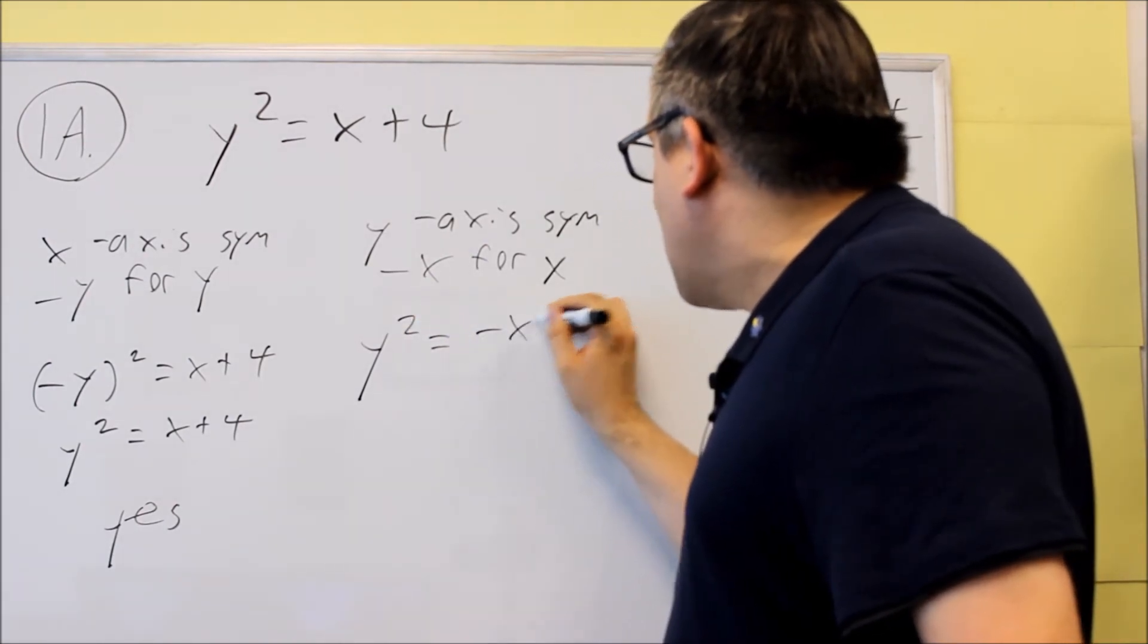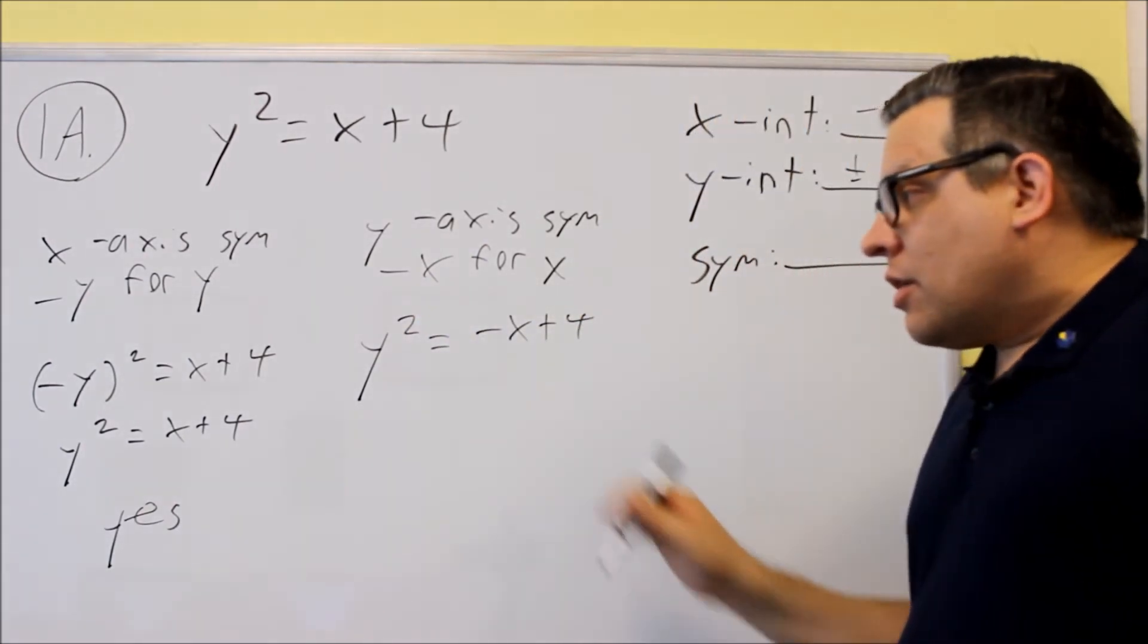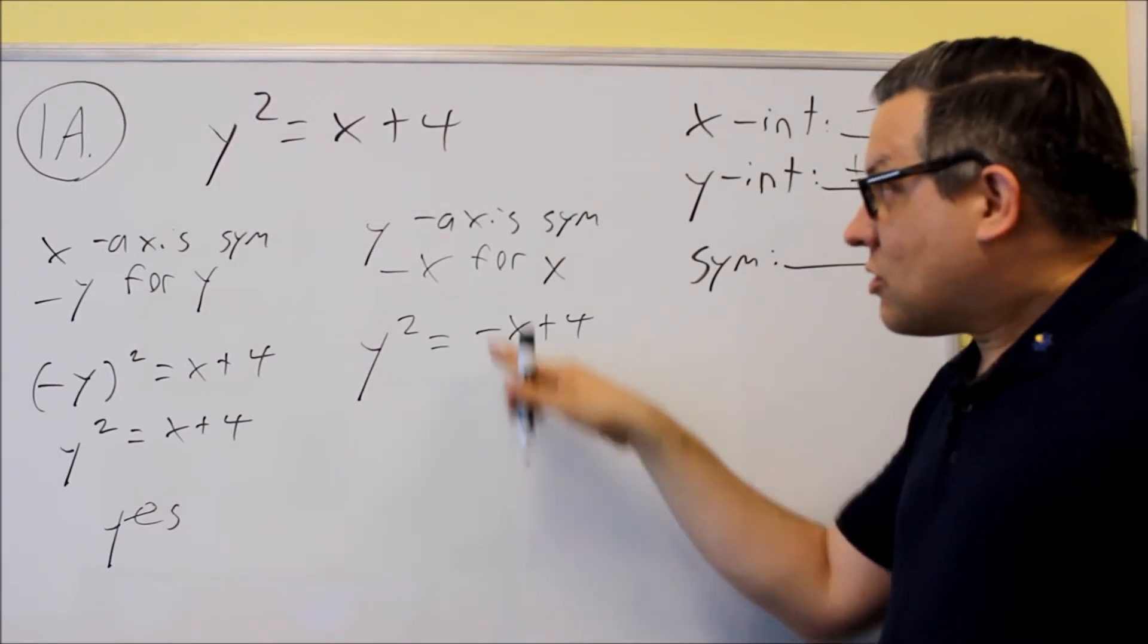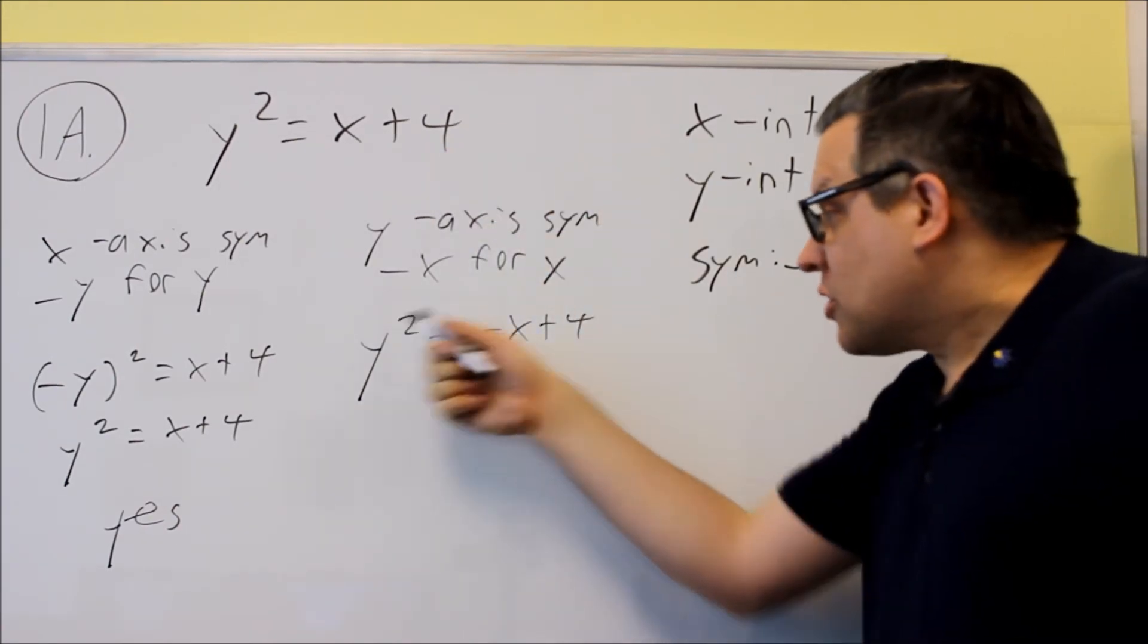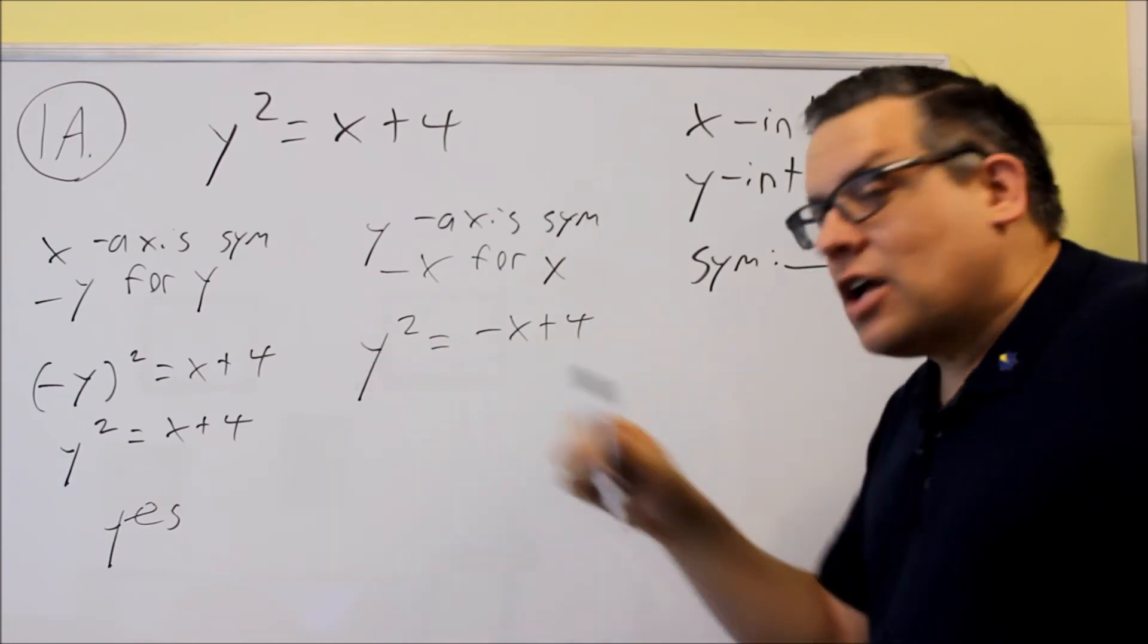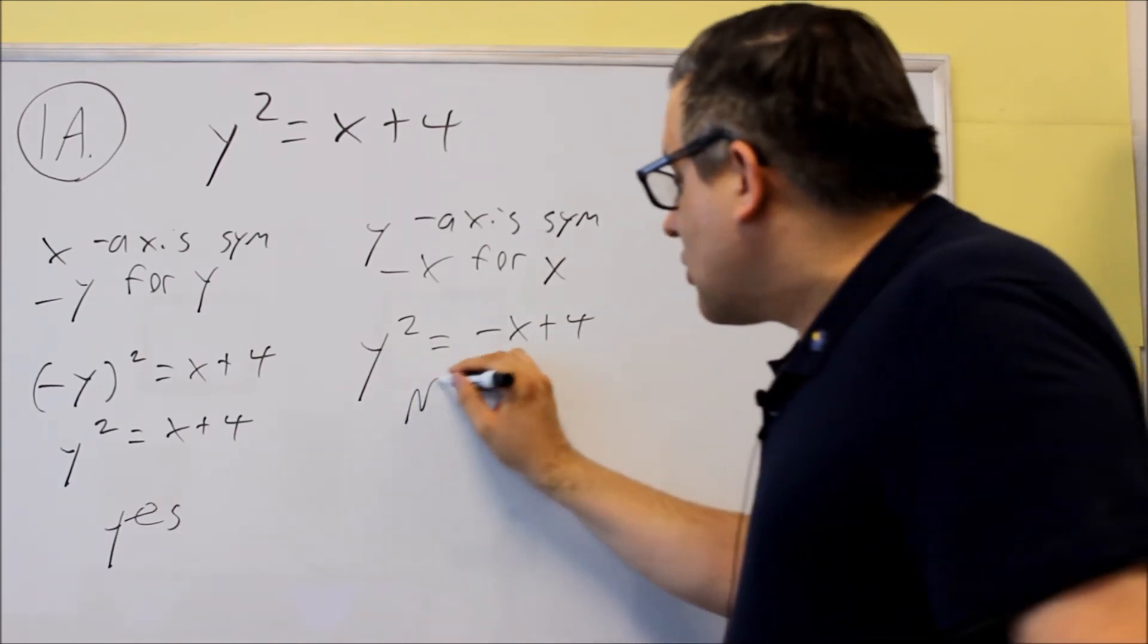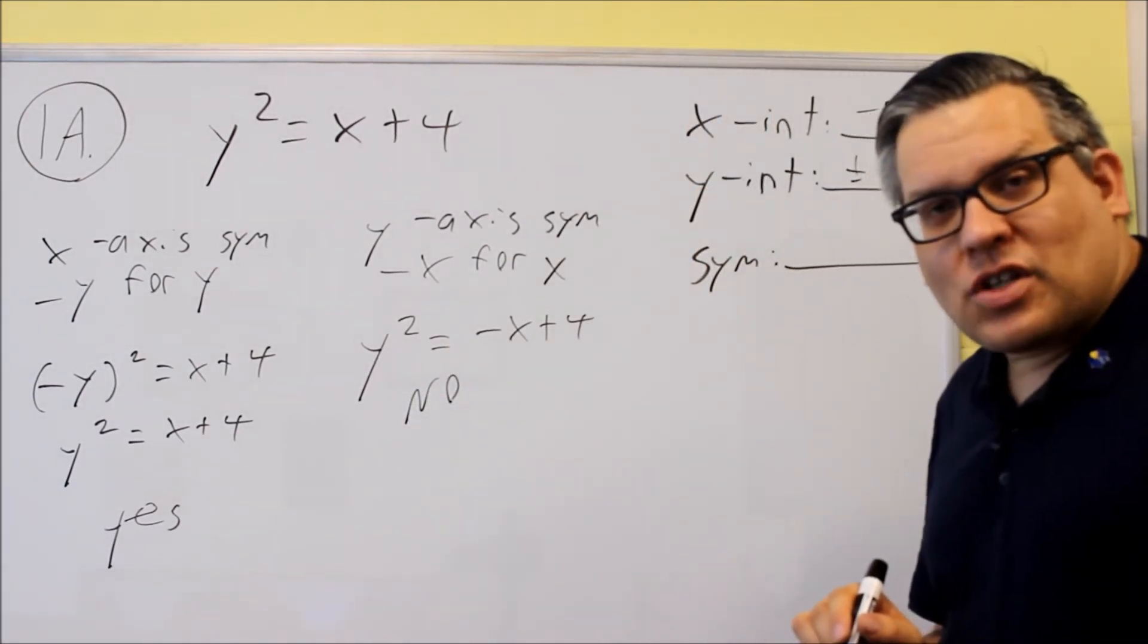No matter what I do, I can't make this look like the original one because if I multiply through by a negative, that means that'll change this sign and it'll change the sign out front. So this is going to be no, does not have that symmetry.